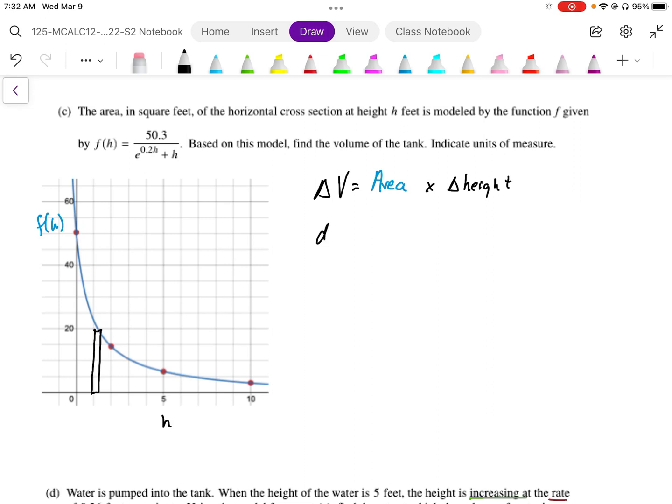We can write it this way. We can say that dV is equal to the area. Well, the area function is f of h times dh.